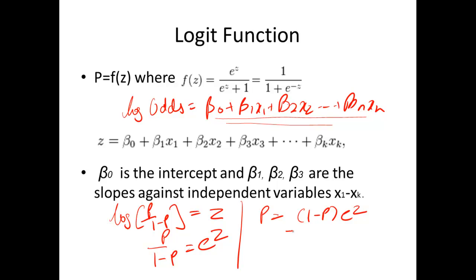Let's open up this bracket. P is equal to e raise to power z minus e raise to power z into p. Let's take p to this term on the left-hand side. This becomes p plus e raise to power z p is equal to e raise to power z. Take p common, 1 plus e raise to power z is equal to e raise to power z.